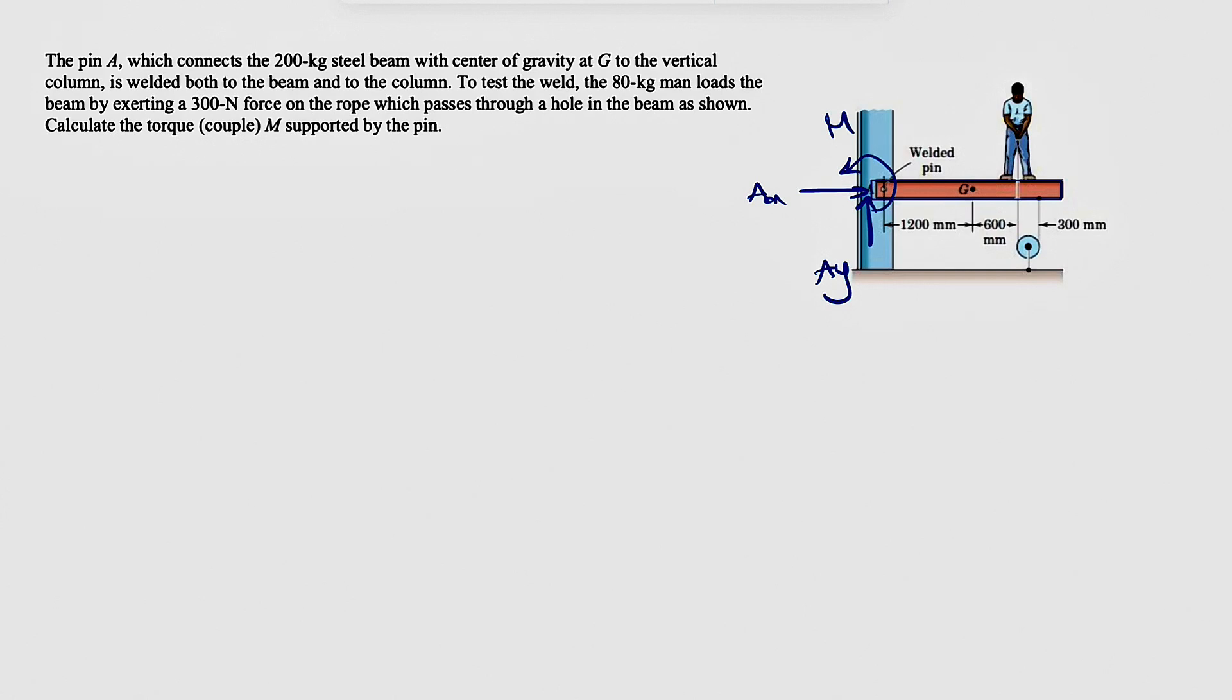Which is what the question is asking. We're going to have the weight of this beam at point G, which is going to be mass times acceleration of gravity, so 200 times 9.81, it's going to be Newtons. And we're going to have the weight of this person, which is 80 kilograms, so 80 times 9.81, that's going to give us Newtons.